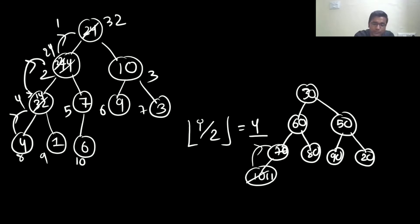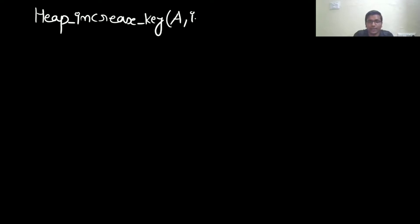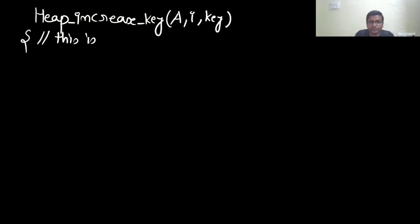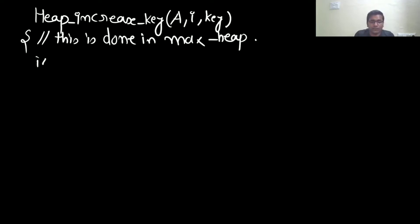Now I will write the code. The function is heap-increase-key. It takes the array, index i, and the key value. This is done in the max-heap — that is the comment — we are going to apply this on a max-heap.